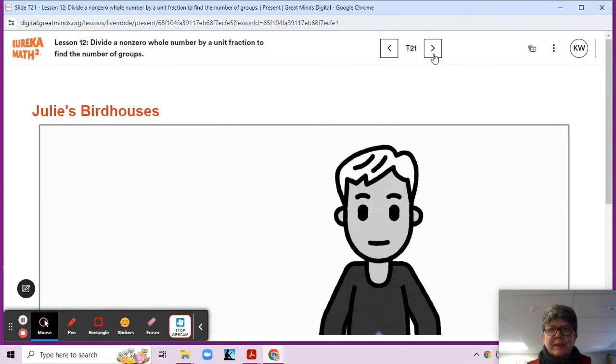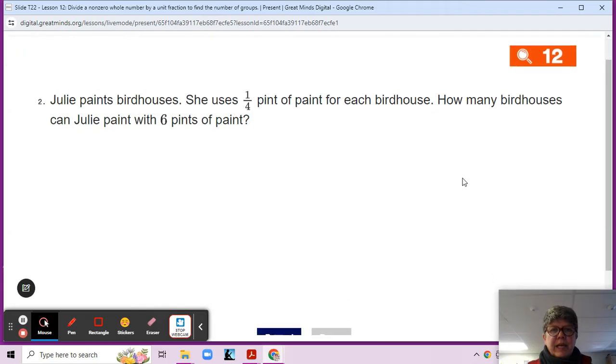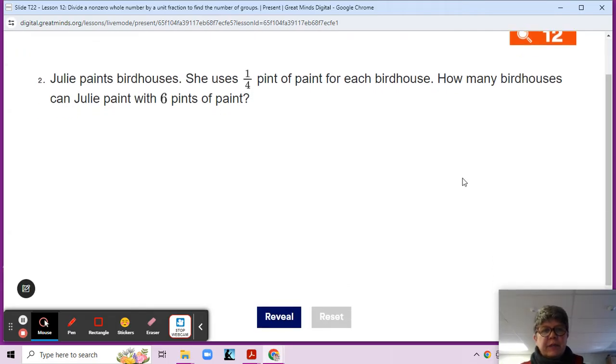All right. Well, that was an entertaining video and it was illustrating for you. Julie paints birdhouses. She uses one fourth a pint of paint for each birdhouse. How many birdhouses can she paint with six pints of paint? Yeah. It's like a tongue twister.